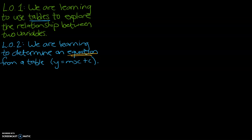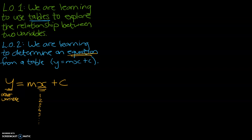Before we get into a couple of examples, we need to explain this formula: y equals mx plus c, and how this formula can be used to identify a rule or an equation that will work for the relationship between two variables that you might be looking at. The x is the variable on your list — it goes one, two, three, four, five, and so on. It's the one that's constantly increasing by one. The y is the other variable that you're investigating — those would be your two variables.